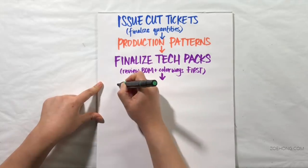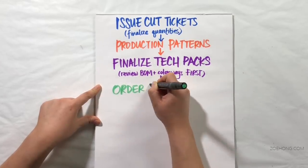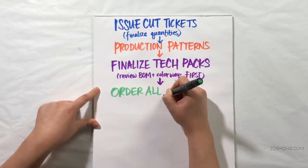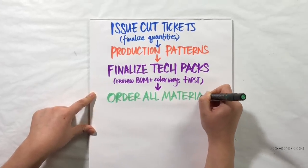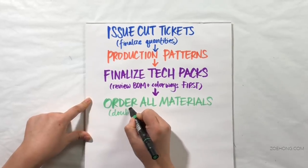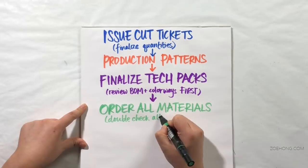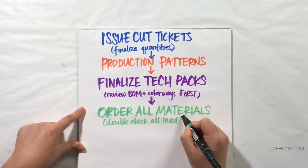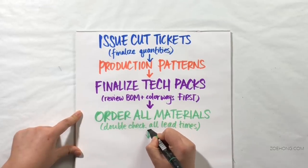Step 4. Order all materials. And you do this early so you can do all these other steps while you wait for your fabrics and trims to arrive. Double check the lead times for all your quantities. Production quantities often take longer than sample quantities. If you don't have the money to pay for everything at once, first order the things that take the longest. Stuff that's going to sit on a boat, stuff that's custom made for you, things like that.